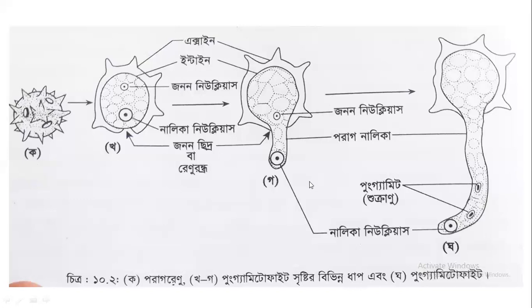It contains a tube nucleus — this is the tube, a tube-bearing nucleus. The other is the generative nucleus. By this time we will be able to distinguish the two of them.